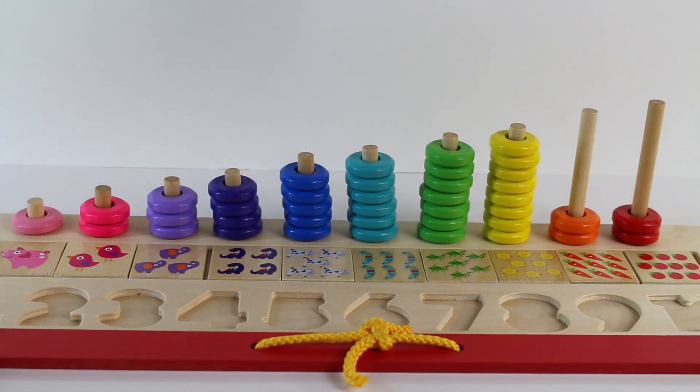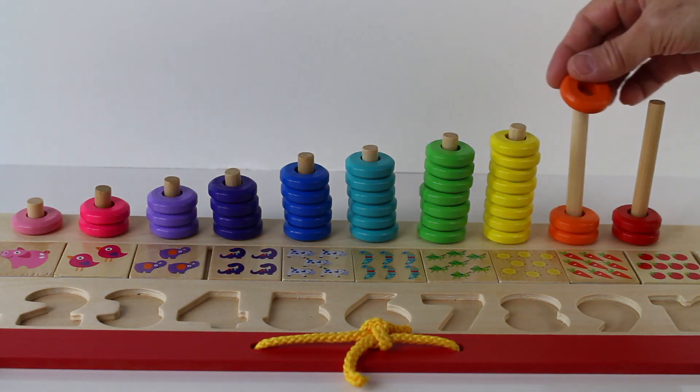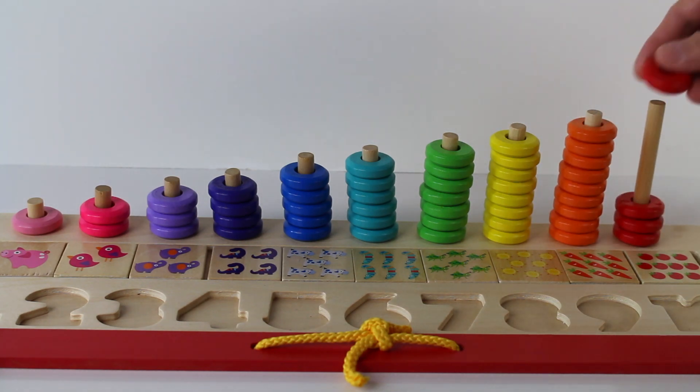Now let's add the yellow rings. Now let's add the orange ones. We have 9 orange rings. And next we have the red ones. And we have 10 red rings.